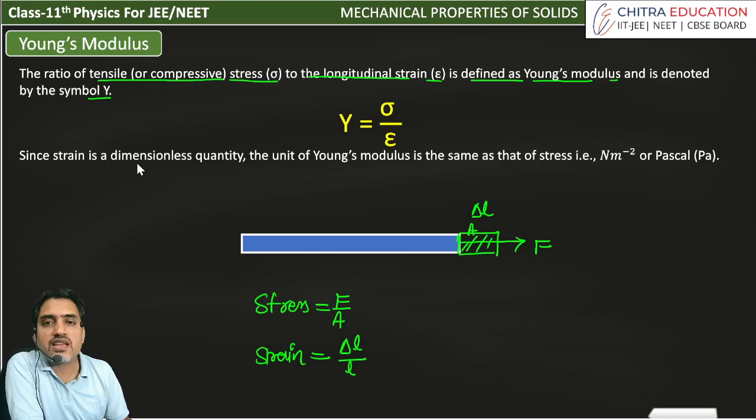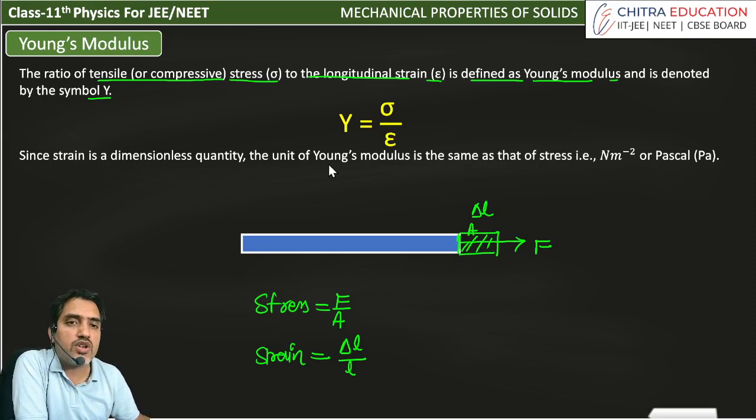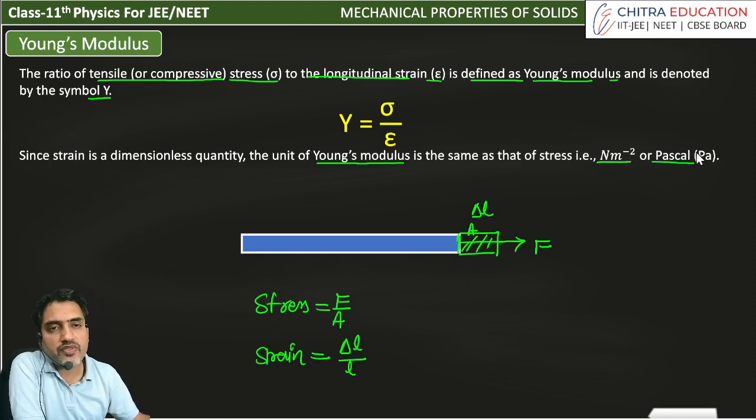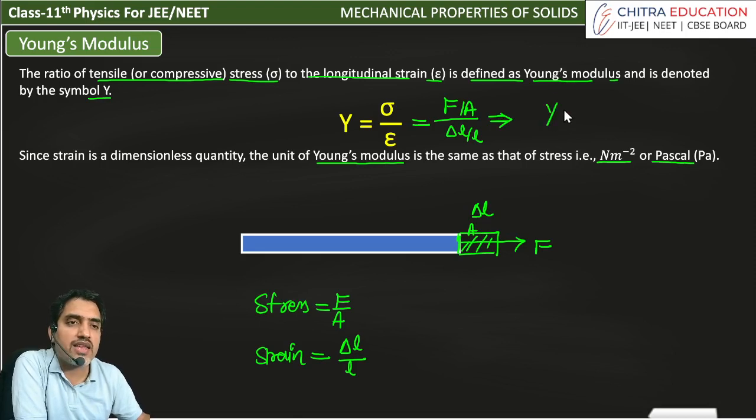Since strain is a dimensionless quantity, the unit of Young's modulus is the same as that of stress, i.e., Newton per meter square or Pascal. Here if we have sigma value as F by A and epsilon as delta L by L,